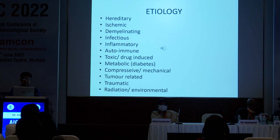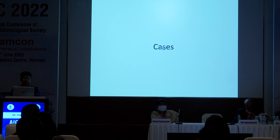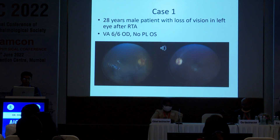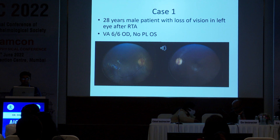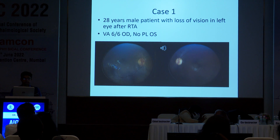Optic neuropathy could fit into one of these various etiologies. Let us look at a few cases. This is a young male who has had loss of vision in one eye after a road traffic accident. You can see the primary optic atrophy in the left eye.